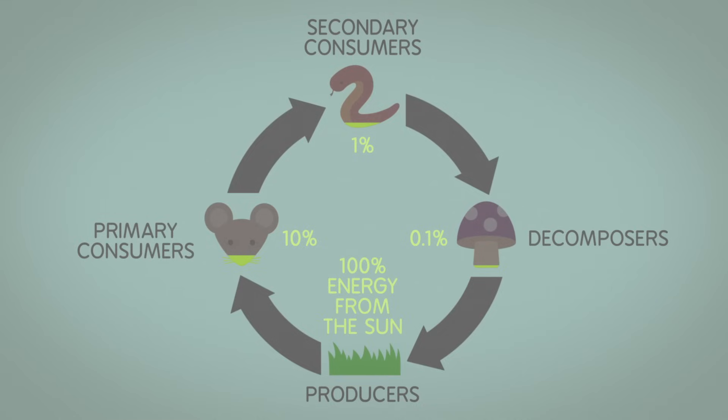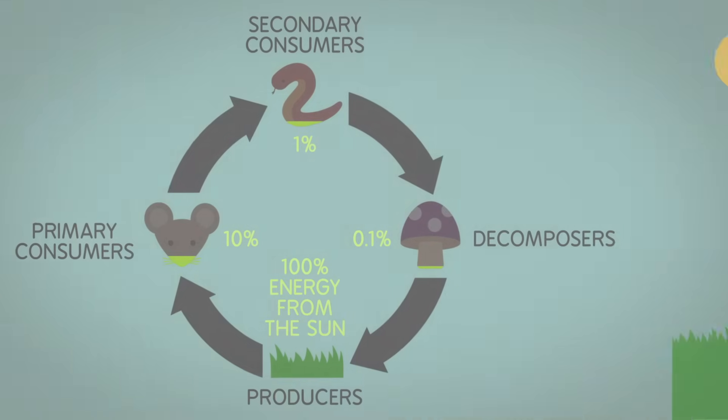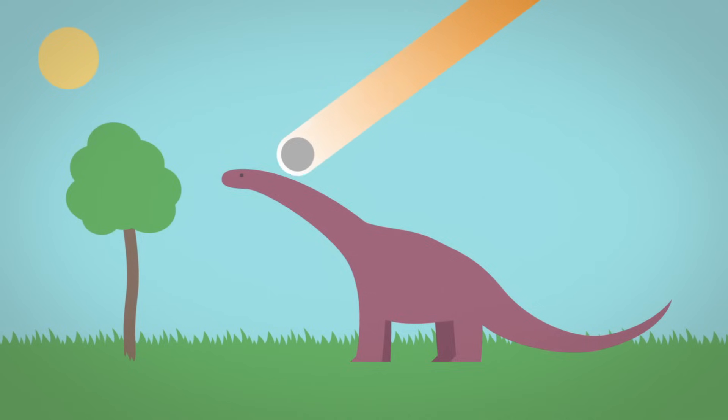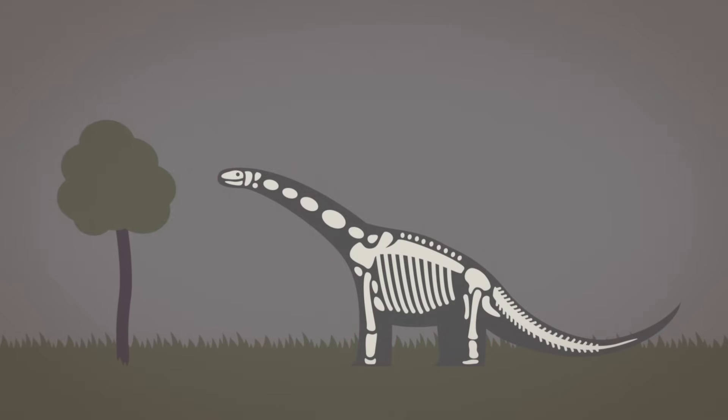So eating producers is the most efficient level at which an animal can get its energy. But without continual input of energy to those producers, mostly from sunlight, life on Earth as we know it would cease to exist.